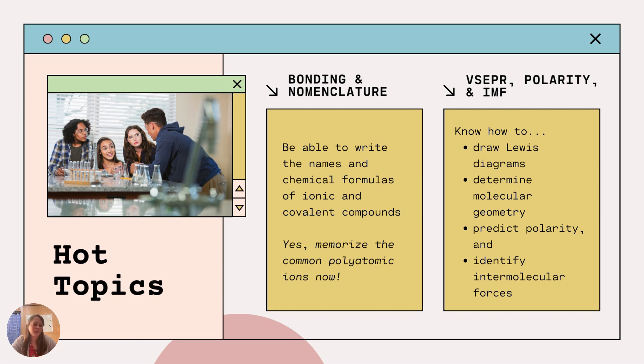So bonding and nomenclature. Be able to write the names and chemical formulas of both ionic and covalent formulas. So that means know the nuances of transition metals. Know that you only use those prefixes for covalent compounds only. And memorize those polyatomic ions. Know that phosphate is PO4 with a charge of 3 minus. Spend 5 to 10 minutes memorizing those now, and it will benefit you all year long.